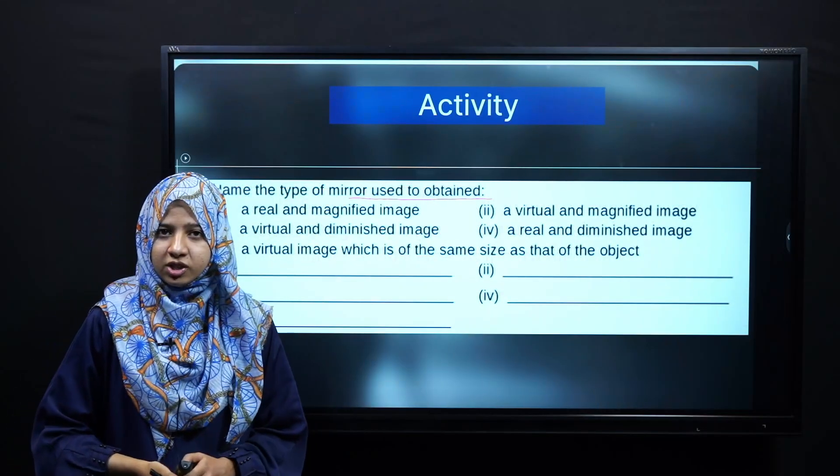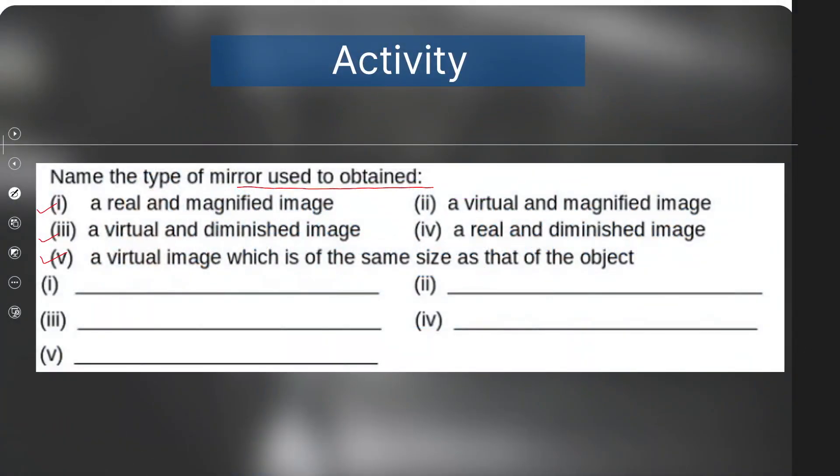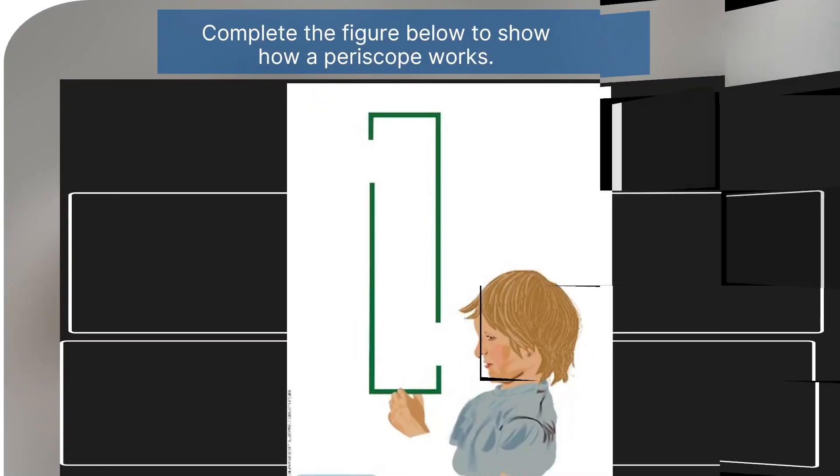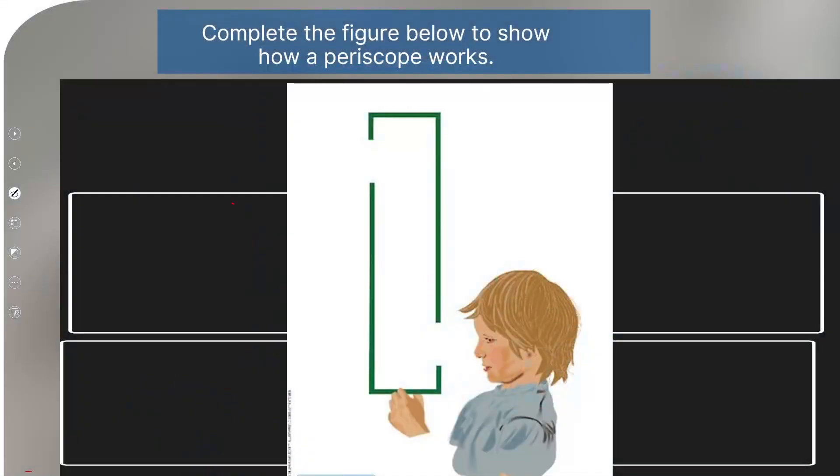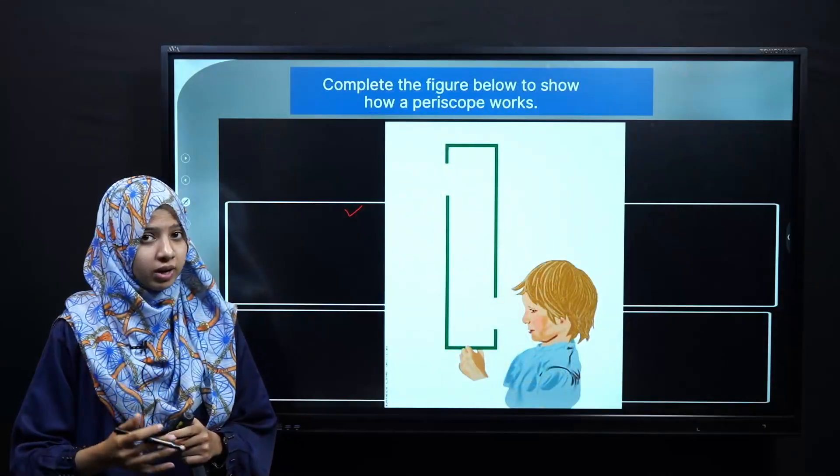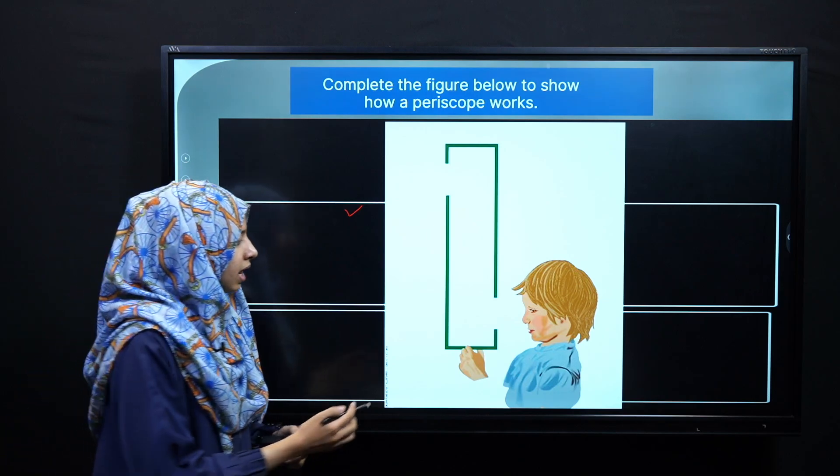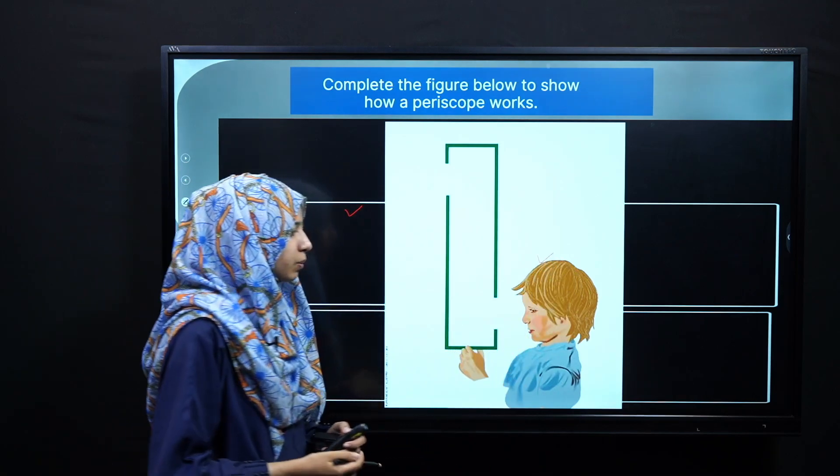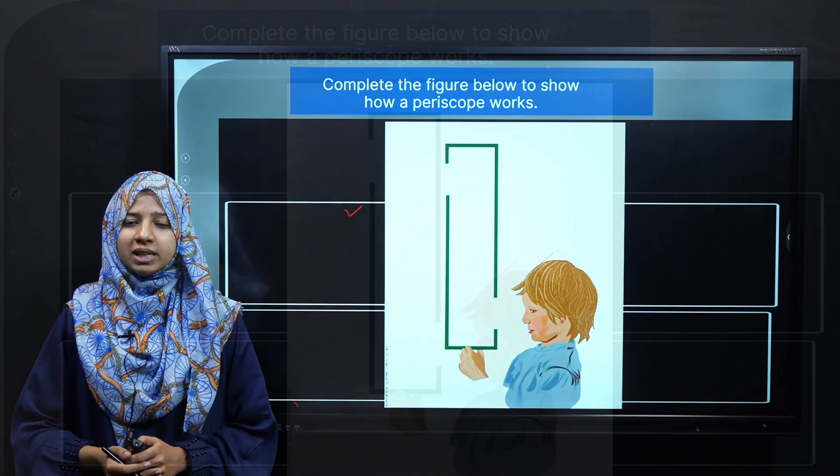Very good. Ab hum chapter ko revise karne ke liye aapne last activity ke baad yaha par aapko periscope diya gaya hai. Iske andar aap is diagram ko label karenge, draw karenge ki kis tarah mirrors yaha par place hote hain aur kis tarah light reflect hokar humare paas observer ki eyes tak pohonchti hai. Jaldi se apne video ko pause kariye aur is diagram ko label kijiye.